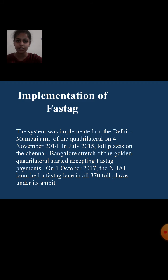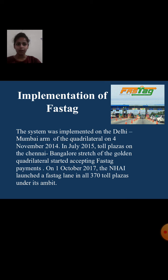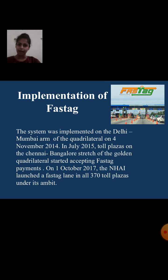Implementation of FASTag: The system was implemented on the Delhi-Mumbai arm of the Quadrilateral on 4th November 2014. In July 2015, toll plazas on the Chennai-Bangalore arm of the Golden Quadrilateral started accepting FASTag payments. On 1st October 2017, NHAI launched a FASTag lane in all 370 toll plazas under its network.